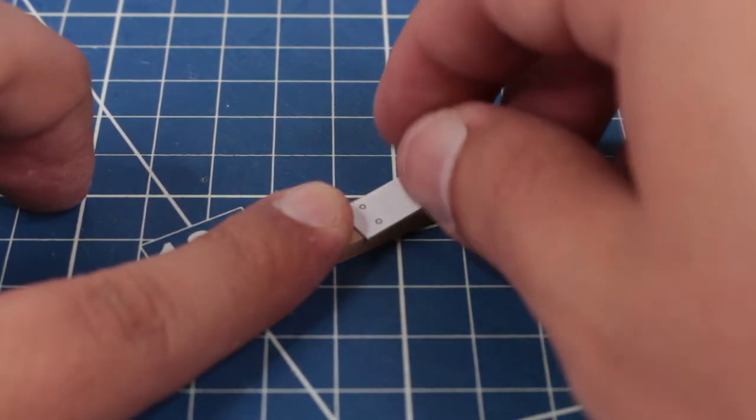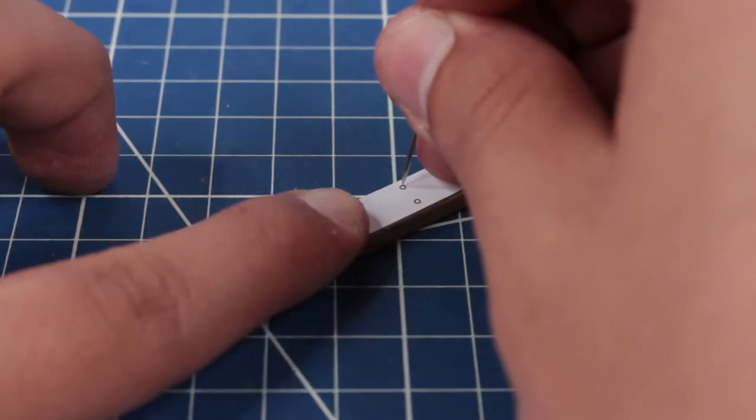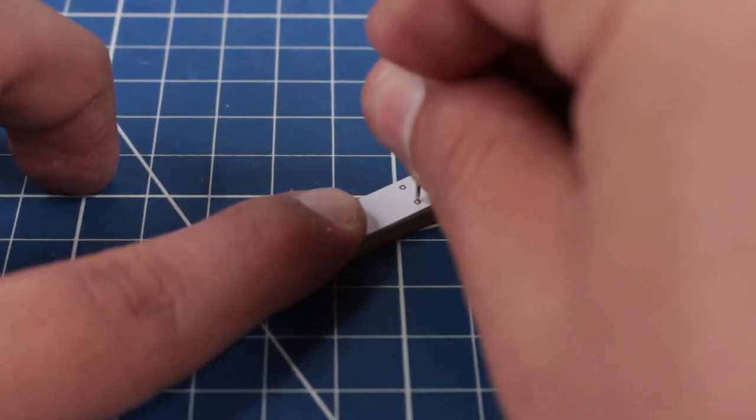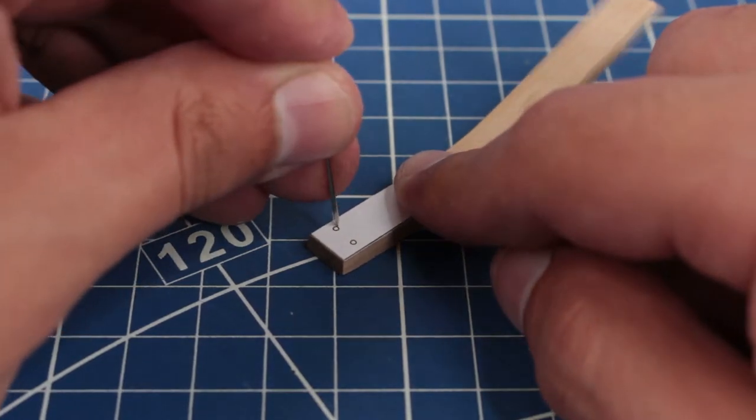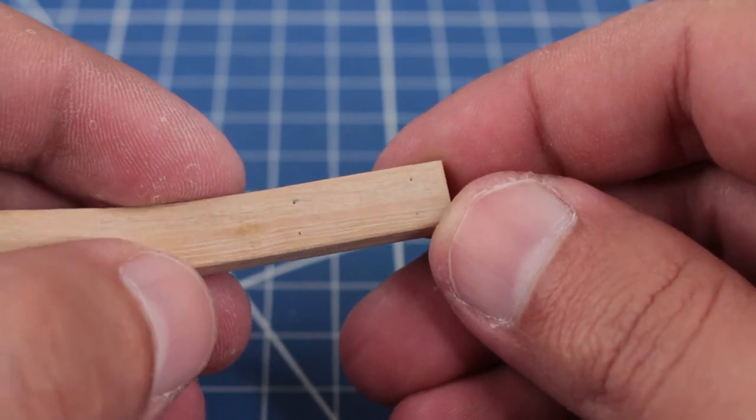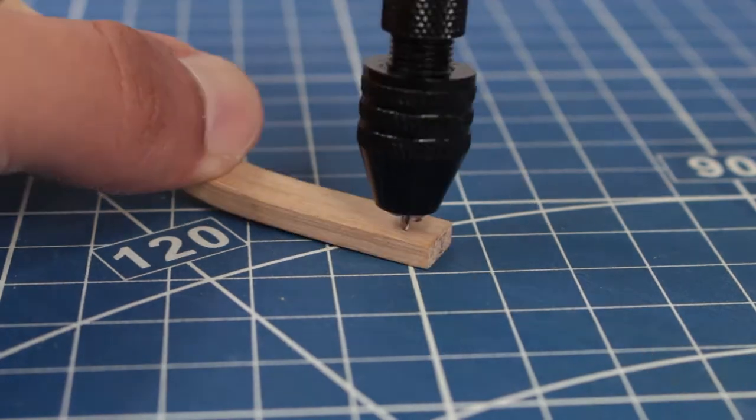And with this paper template I was able to mark the location of each screw. And then I made the miniature holes for the screws.